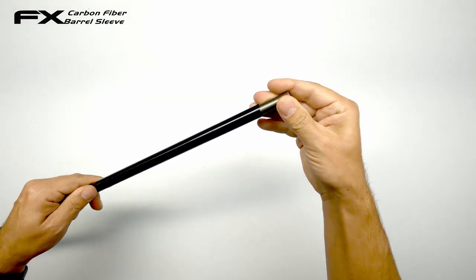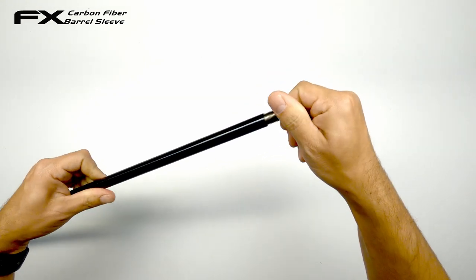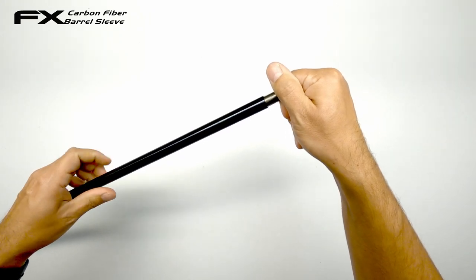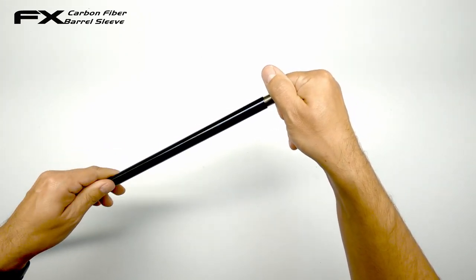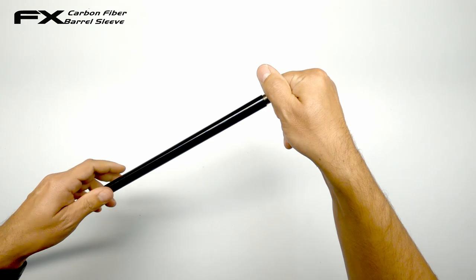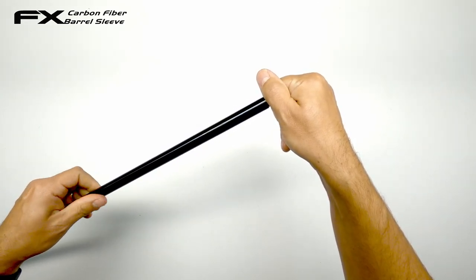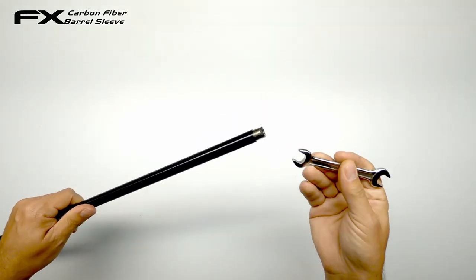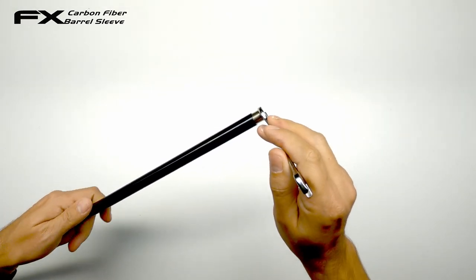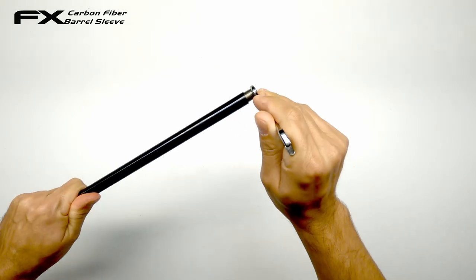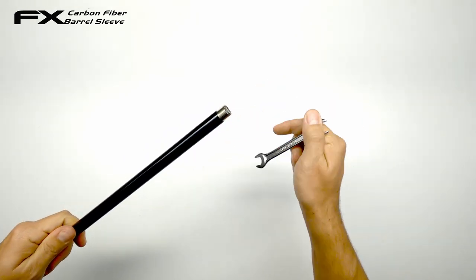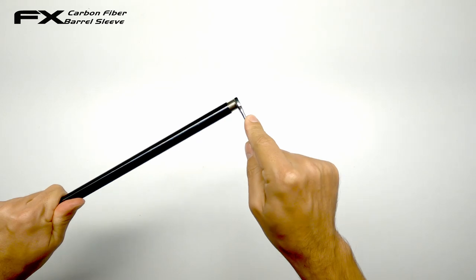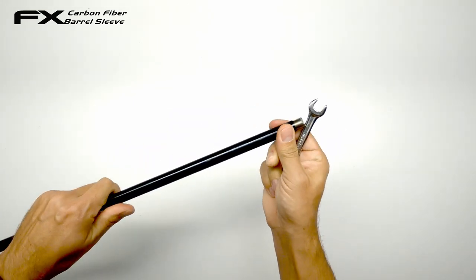Taking your barrel nut. Sliding it over. Making sure the threads are starting nicely. Snug it up with a 10mm. For this you can clamp it into a vise for instance. It doesn't have to be super tight. So just to make sure everything is tightened.